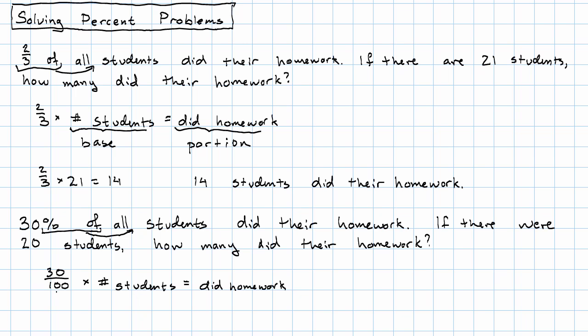Thirty hundredths, I think I'd rather write that as a decimal. Zero point three times 20 equals, two times three is six. Zero, but one digit after the decimal point. So just six.